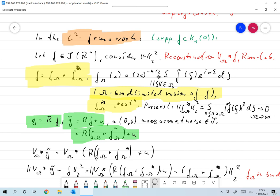f_omega is the band limited version of f. That is, it's the inverse Fourier transform of the frequencies in f below omega. That's what we call the omega band limited version of f.